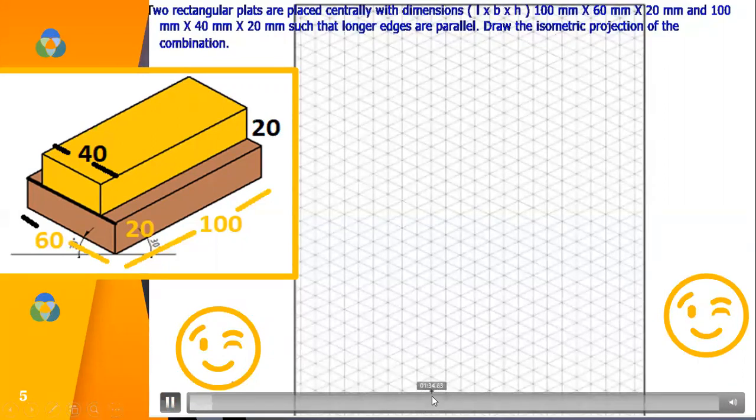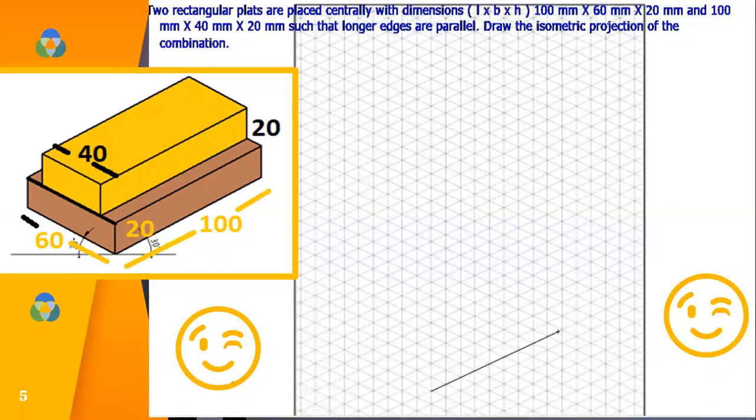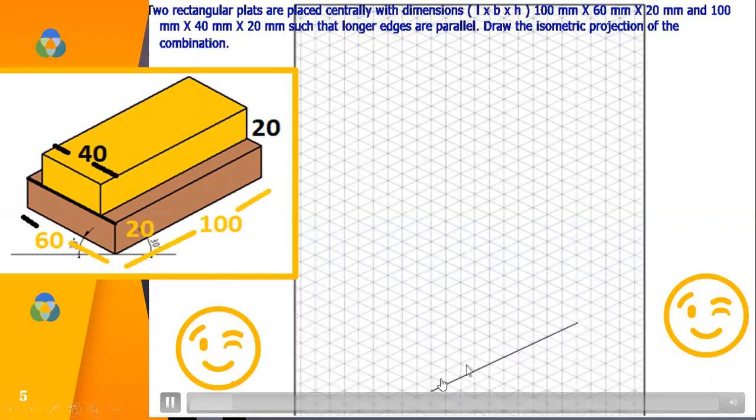So let's start the problem. Take any point or start from any point, count 100 mm means count 10 boxes towards your right. You are standing here towards your right, 100 means each measures 10 mm. So 10 boxes towards your right.